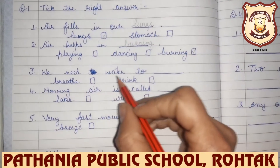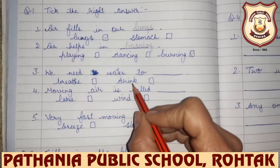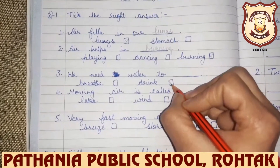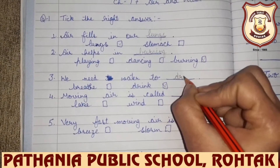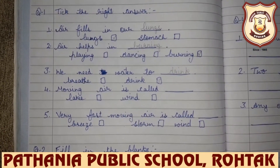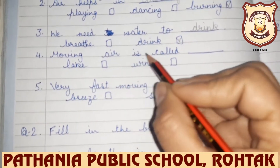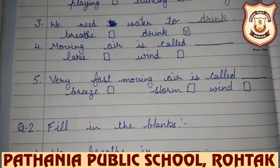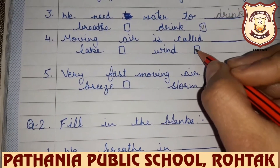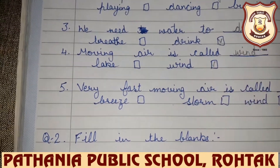Number three: We need water to blank. Why do we need water? We need water to breathe or to drink? We need water to drink. Tick on drink and write down in the blank. Number four: Moving air is called blank — lake or wind? Moving air is called wind. Write down W-I-N-D, wind.